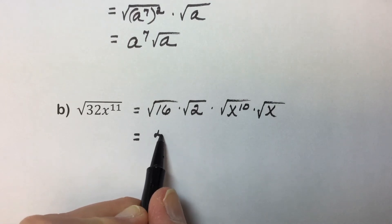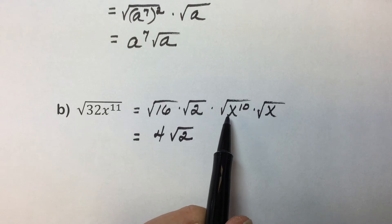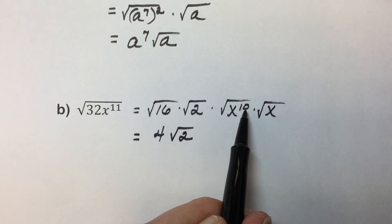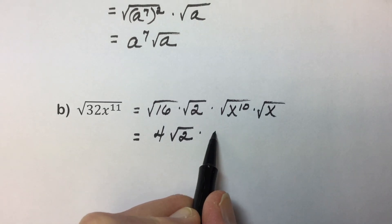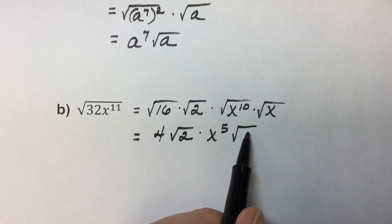Simplifying, we have square root of sixteen is four, cannot simplify square root of two. Square root of x to the tenth power, all we have to do is divide our exponent by two, and that leaves an x to the fifth power, and x to the first.